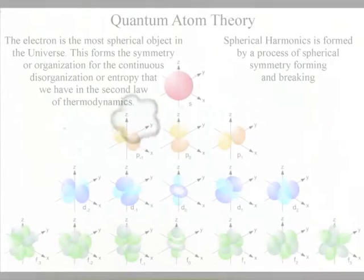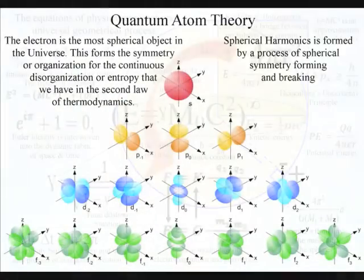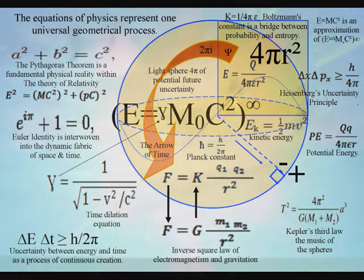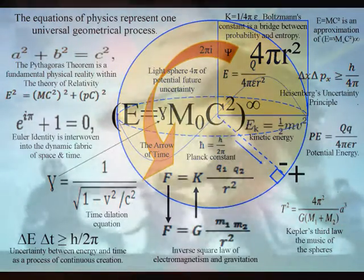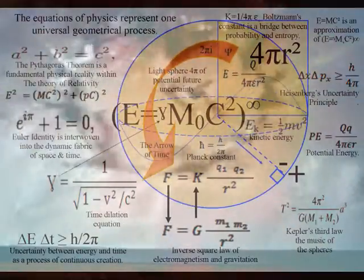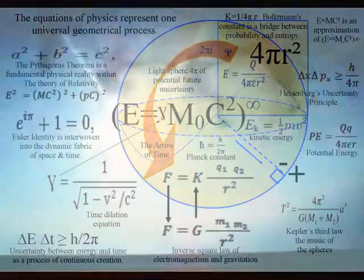This whole theory is based on just one equation that represents the dynamic geometry of a three-dimensional process of continuous creation or energy exchange. Within this equation, the Lorentz contraction of space and time is between the energy and mass.